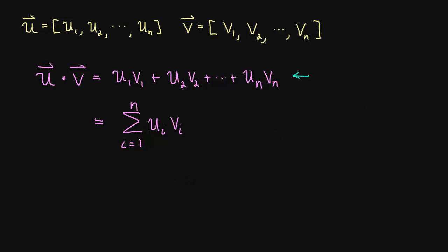Let's do an example. So if we have u is equal to 1, negative 2, and 5, and v is equal to 4, 3, and 1. So what is this dot product?